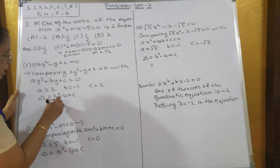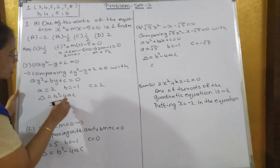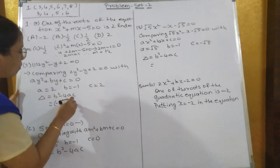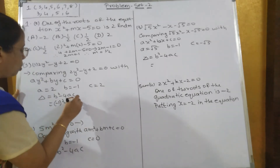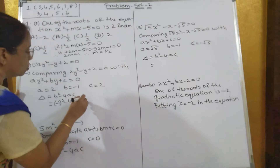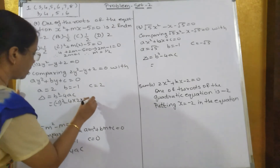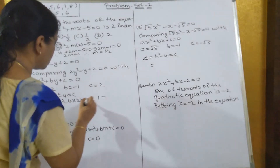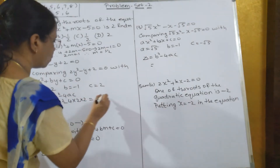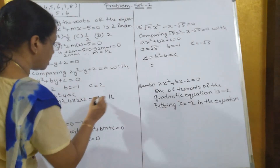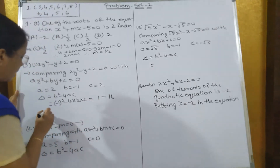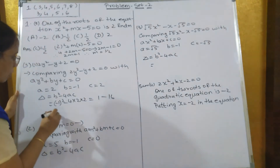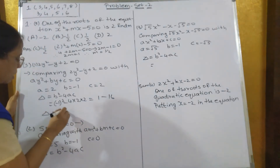b² - 4ac: (-1)² - 4×2×2 = 1 - 16. So delta equals minus 15.